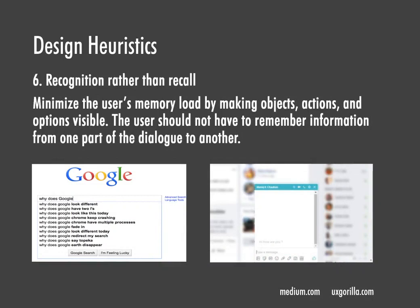Recognition rather than recall: a good user experience doesn't require users to recall information frequently. Instead, it offers all options and information required to make a choice. Google suggestions are an example — showing users things they can recognize improves usability over needing to recall from scratch. Minimize the user's memory load by making objects, actions, and options visible. Also, almost every messenger app has chat history so you don't have to recall a conversation from hours or years ago.